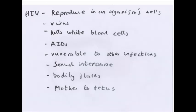HIV will reproduce in a person's cells. It has antigens on its cell surface membrane which are identical to the host's, so it cannot be picked up by the immune system.